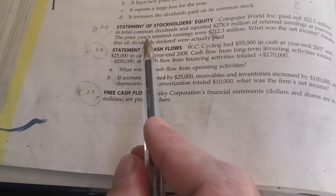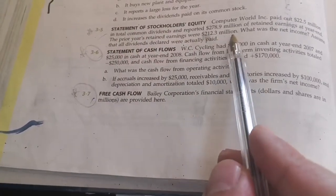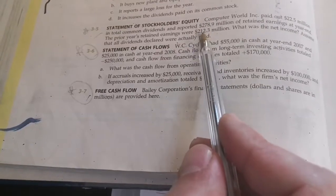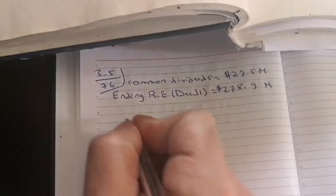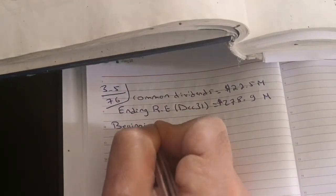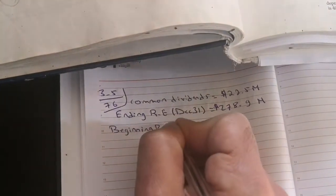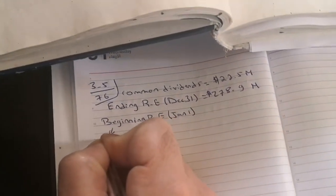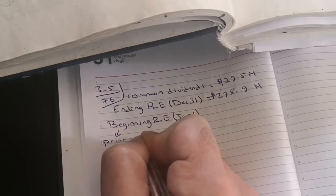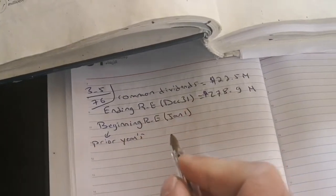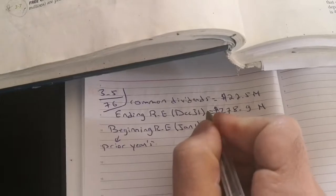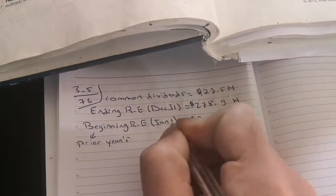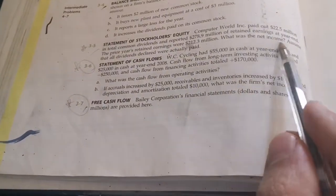The prior year's retained earnings were $212.3 million. Prior year means the previous year, so the ending of the previous year is the beginning of the current year, right? Beginning retained earnings means at January 1 the current year, or as mentioned in the book, prior year's retained earnings, which means at December 31 the previous year. It's equal to $212.3 million.